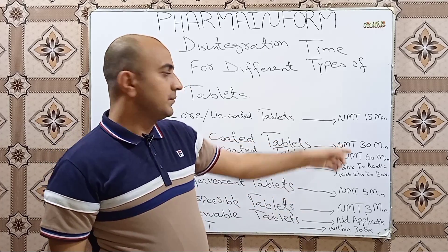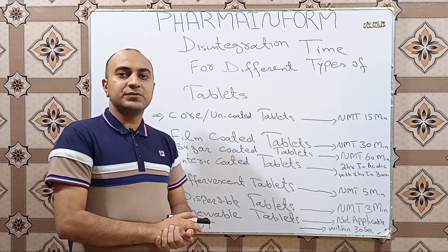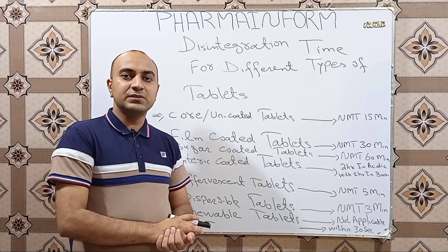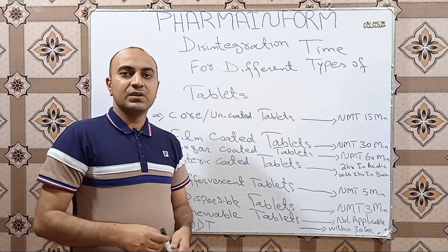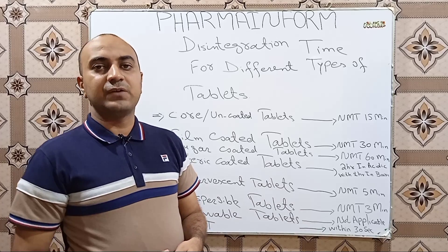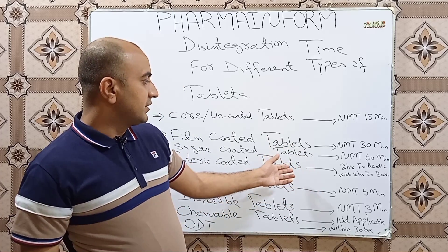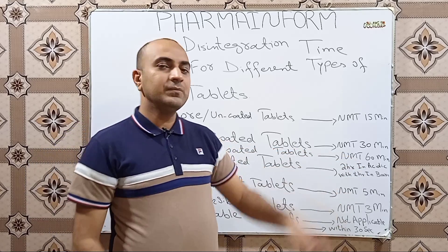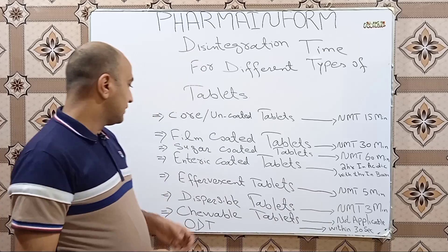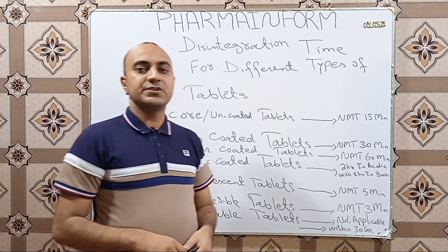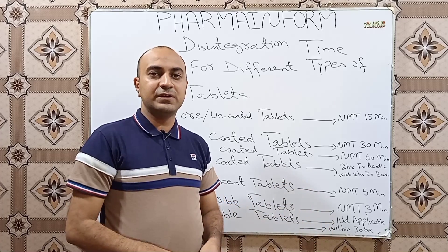Film coated tablets should disintegrate in a time not more than 30 minutes, meaning film coated tablets should disintegrate within 30 minutes. So the next is: what is the disintegration time for sugar coated tablets? Sugar coated tablets should disintegrate in a time not more than 60 minutes, or one hour.